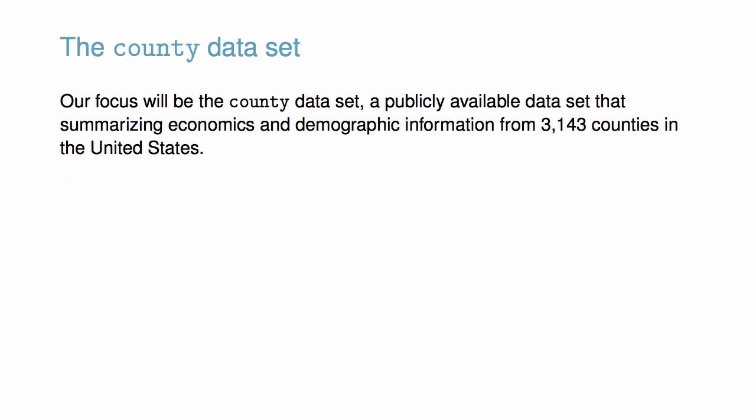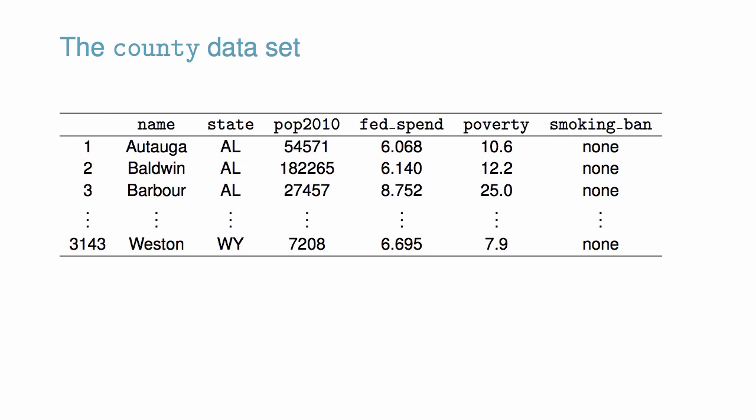Throughout, our focus will be on the county dataset, a publicly available dataset that summarizes economic and demographic information from 3,143 counties in the United States. This dataset contains information about each county, including its name, the state where it resides, its population in 2010, per capita federal spending, poverty rate, and several additional characteristics. The data matrix shown here presents some of this information.